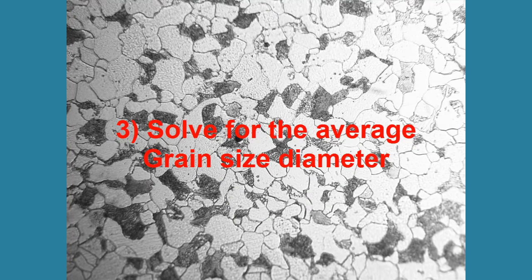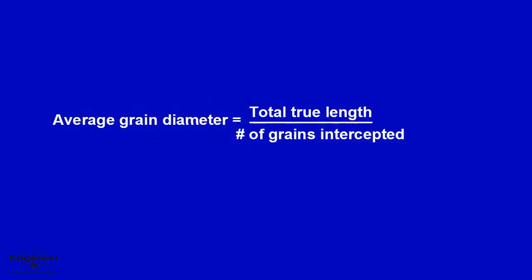The last thing to do is solve for the average grain size diameter. First, by solving for the total true length, then solving the number of grains intercepted.